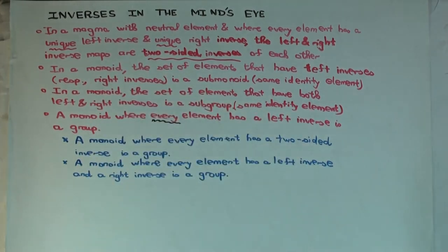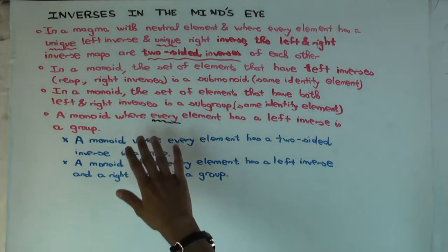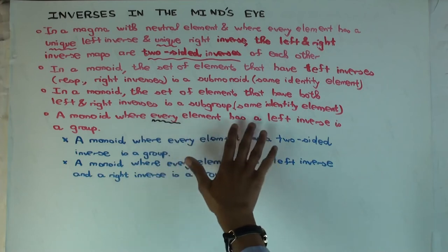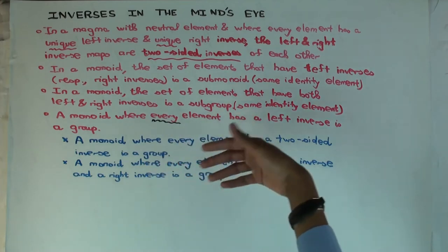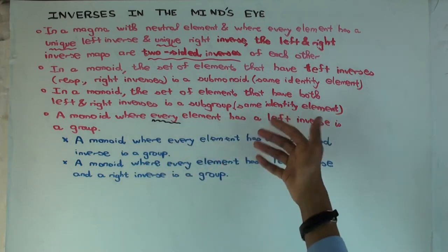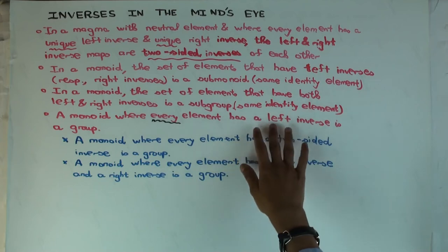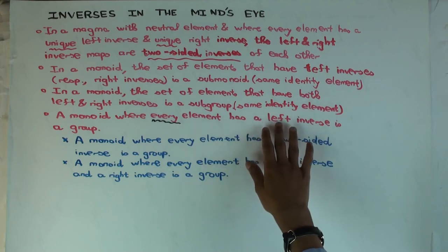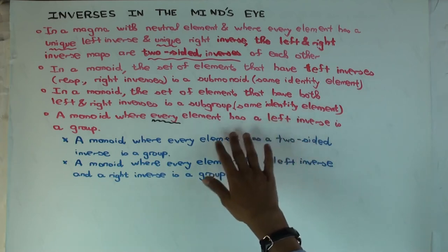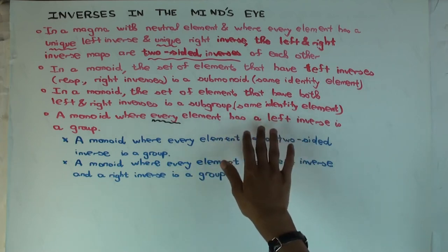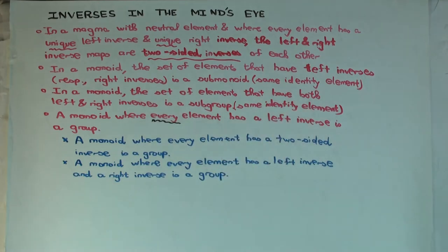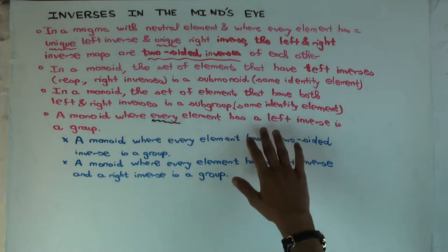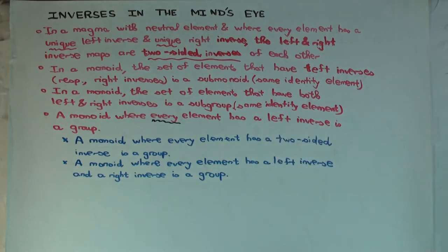What does this tell you overall? It tells you that for the definition of group, when you are checking that something is a group, you just have to check that every element has a left inverse. You don't have to separately check that every element has a right inverse, and you don't have to check that the inverses are equal — you can just check the left inverse condition, because the rest follows automatically.